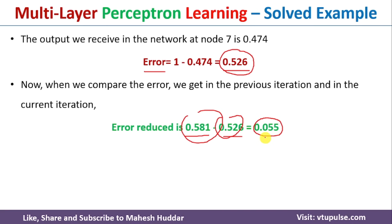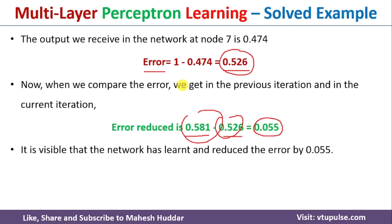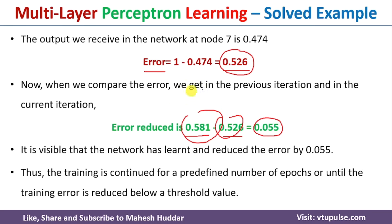If you are happy with this error, you can stop here. If you are not happy, we need to modify the weights again by updating the errors at each neuron and repeating the calculations. In this case, I have shown only two epochs. We need to repeat these epochs again and again so that we get the minimum error at the end.